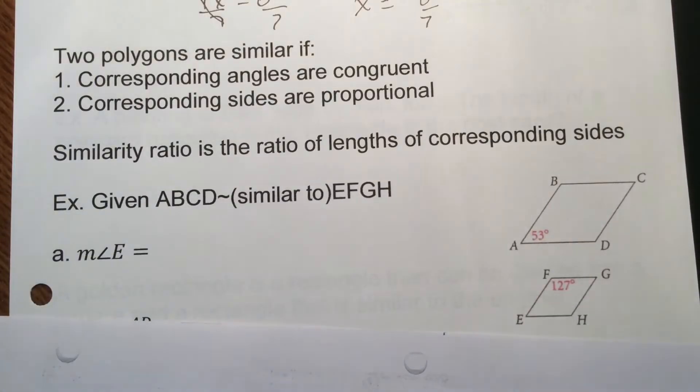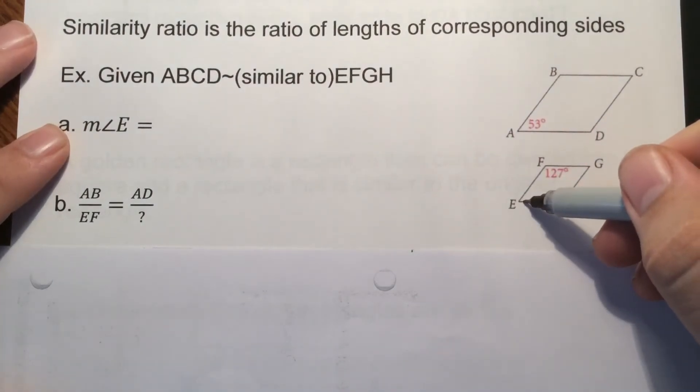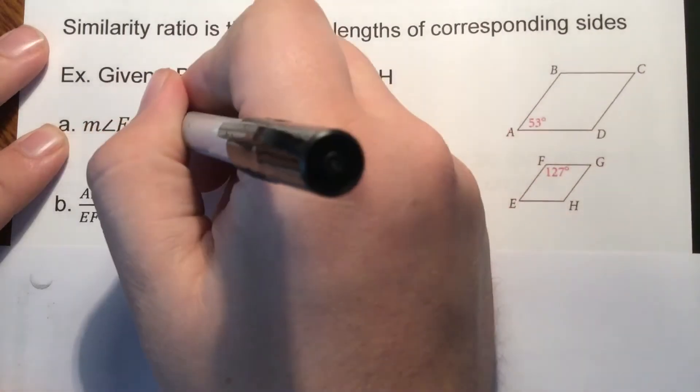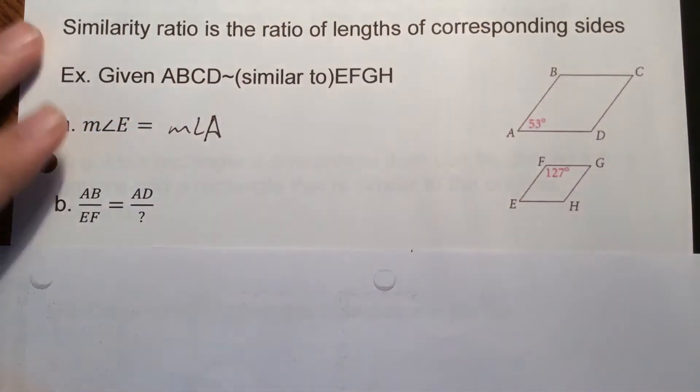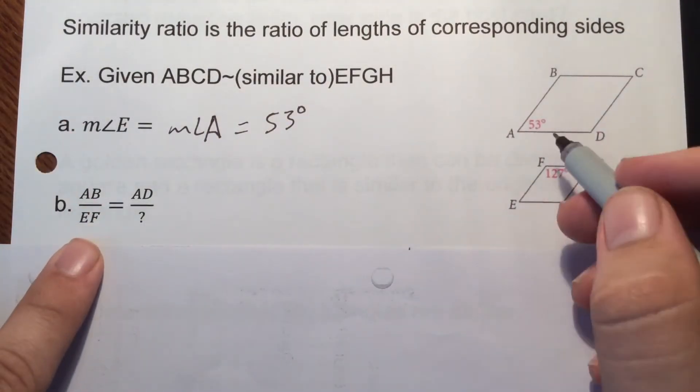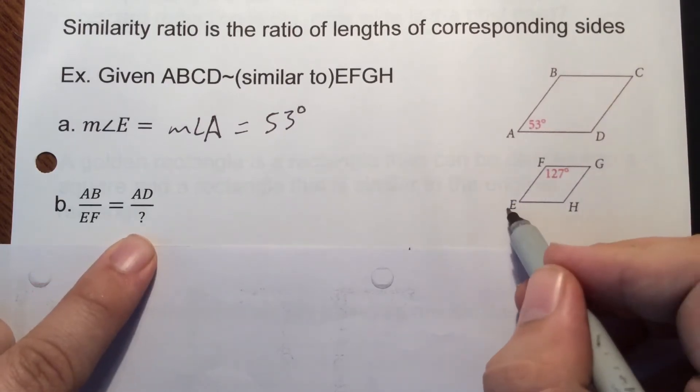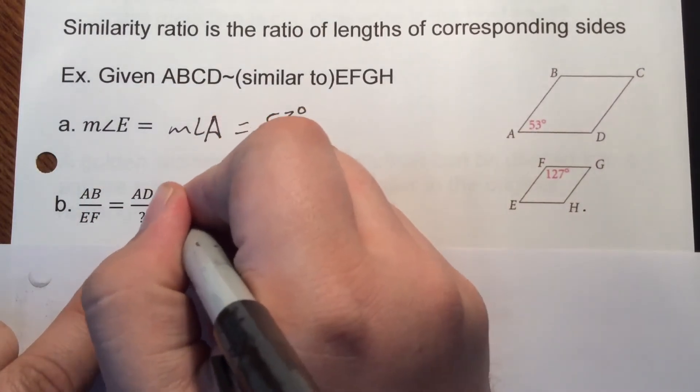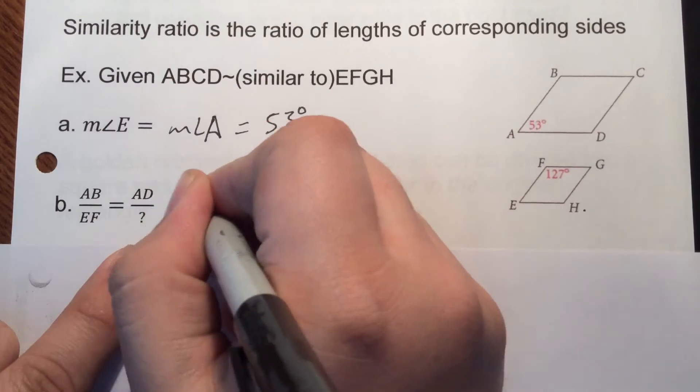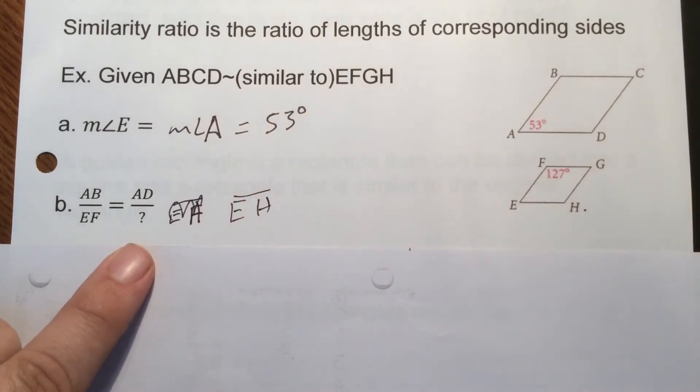So first off, just if we know these two are similar. What do we know? Well, the measure of angle E is going to be right here. It has to equal what? Well, it has to be what angle A is because corresponding angles have to be congruent. So that makes us 53 degrees. The other part of this is AB over EF. So AB is this side over EF would be the same thing as AD over, what matches up with this bottom, EH. Let me write that better. EH is the side that would match.